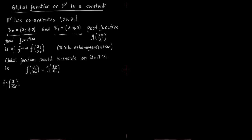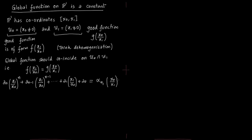Let us write down a polynomial f of degree n. This global function has degree n on U0 and degree n1 on U1 — n1 could be the same as n or different, it doesn't matter. On the intersection, we must be able to glue this global function, meaning it has to agree on the intersection.